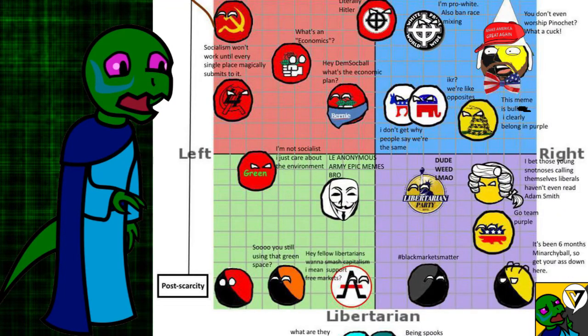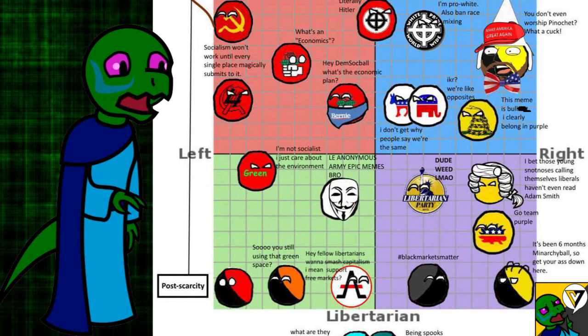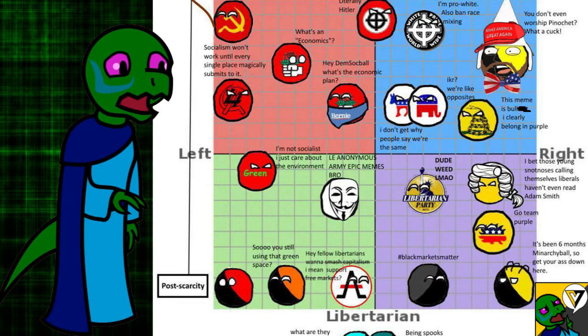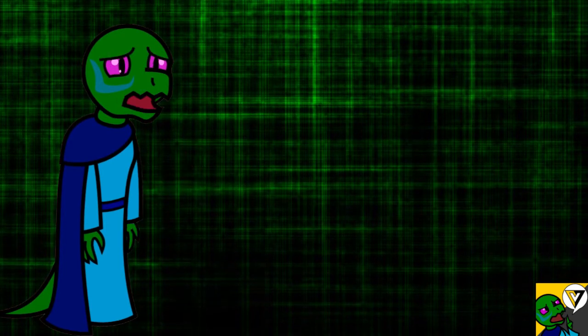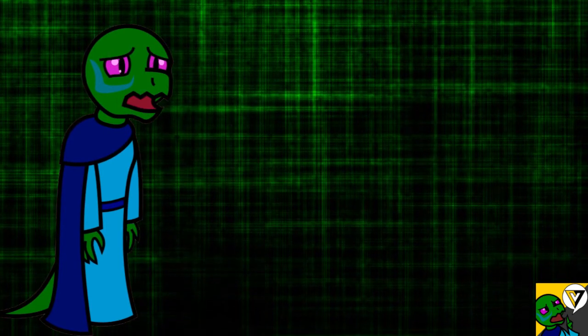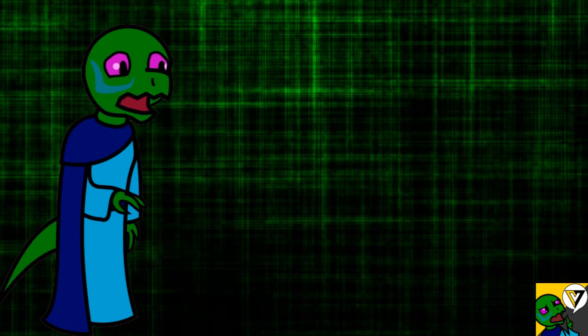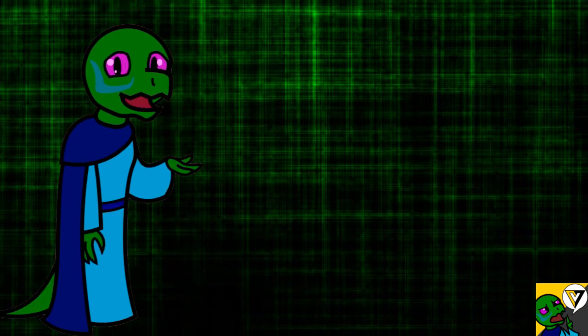Perhaps the most popular political spectrum is the Nolan chart, developed by David Nolan, which is a two-axis chart that measures both personal freedom and economic freedom. Ultimately, there is no clear consensus on what the political spectrum means. Nevertheless, it remains a useful tool towards categorizing and clustering certain beliefs, and is likely to remain so.